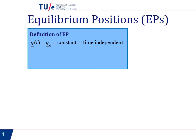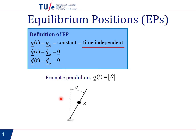An equilibrium position is defined as a position that is constant — and when we say constant, we mean time-independent, so it doesn't change in time. Therefore, the velocity corresponding to this position q0 is 0, q̇0 is 0, and the acceleration corresponding to this equilibrium position is 0 as well. Let us look at an example of an equilibrium position using the pendulum.